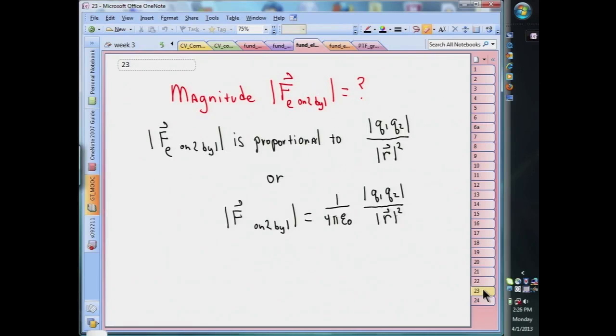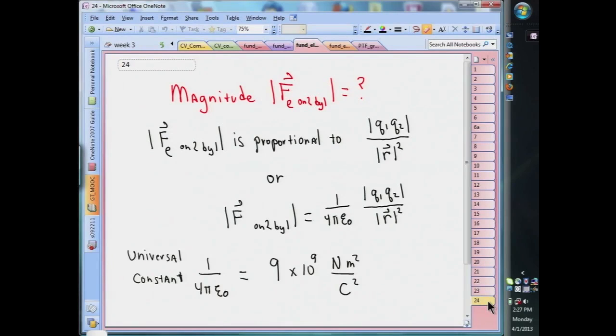The words 'is proportional to' means that there is some constant which we will call 1 over 4 pi epsilon zero, such that the magnitude of the force is equal to this constant times the product of the magnitude of the charges divided by the square of the distance. Now, 1 over 4 pi epsilon zero is a universal constant which has the value shown here in the SI system of units.